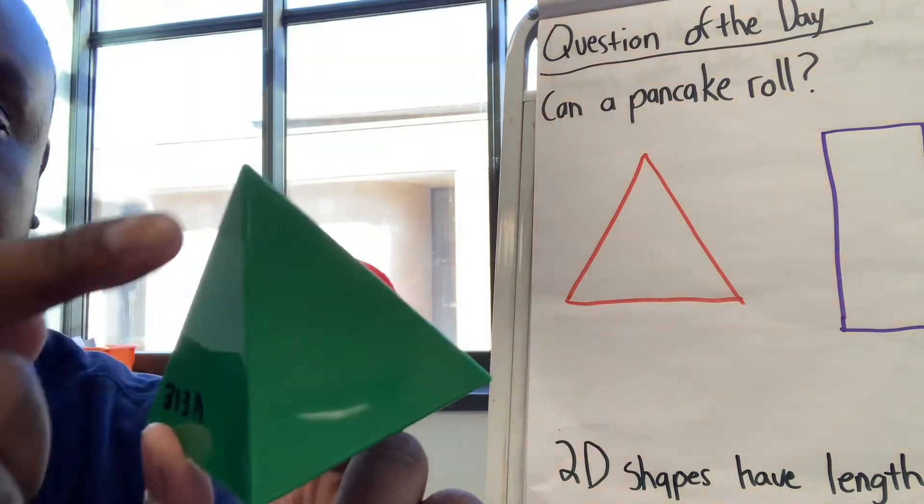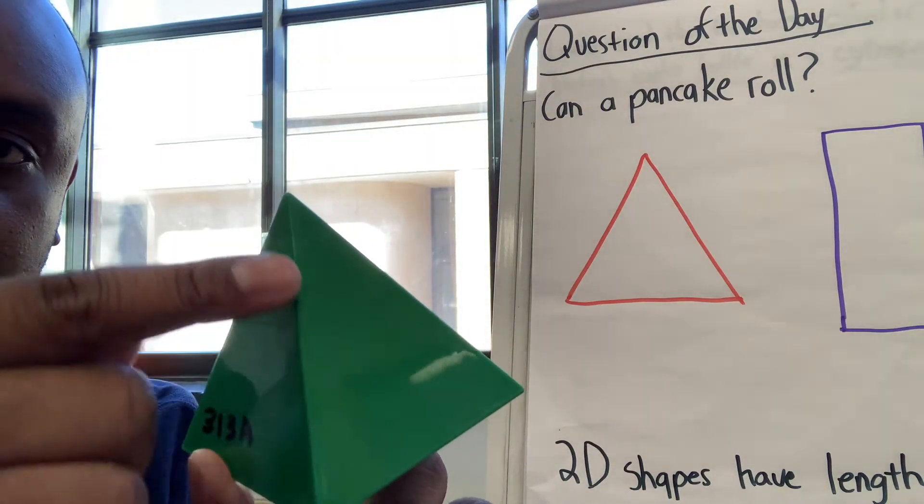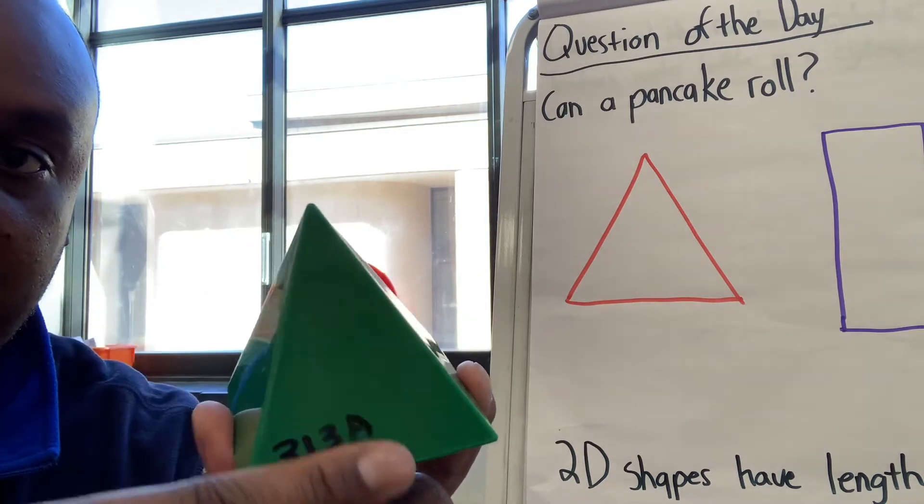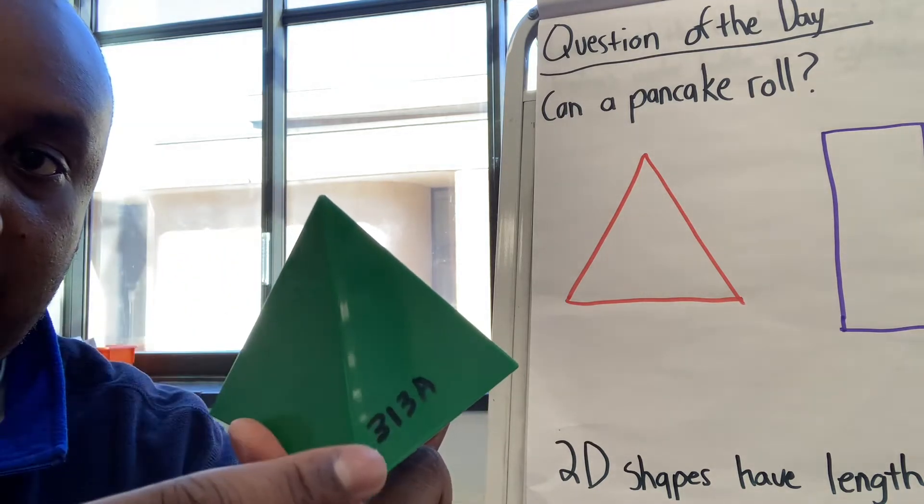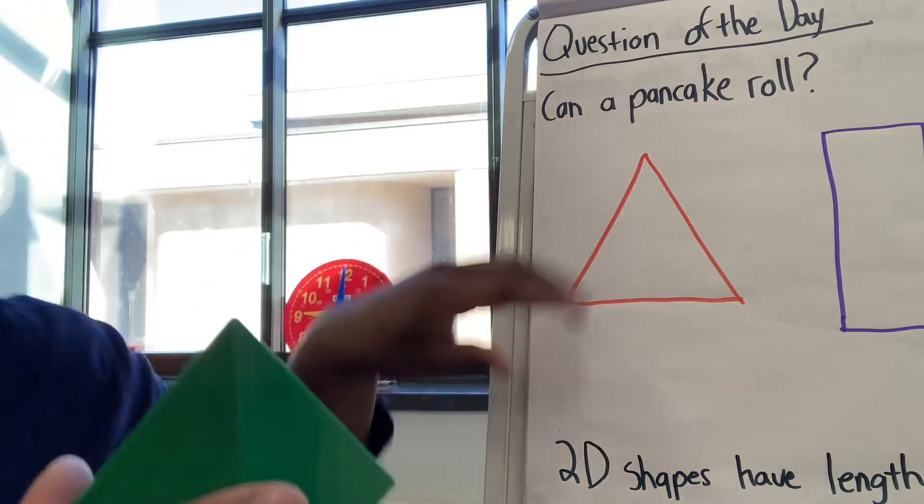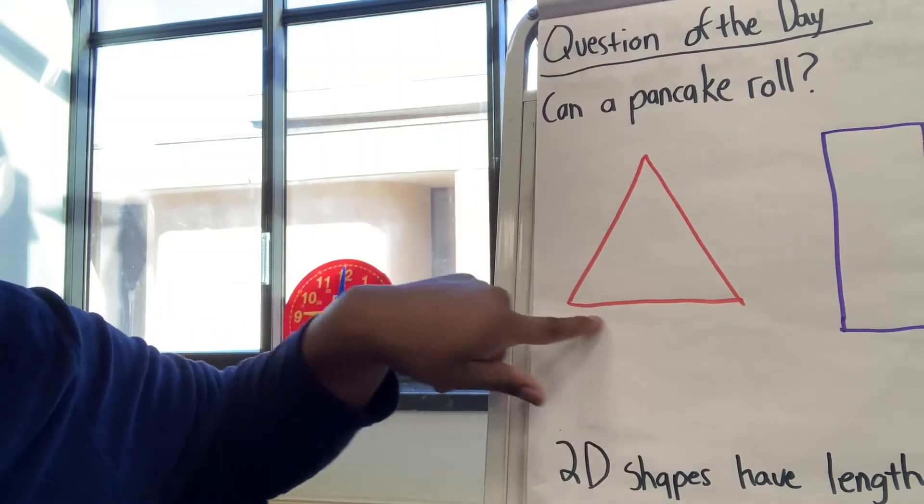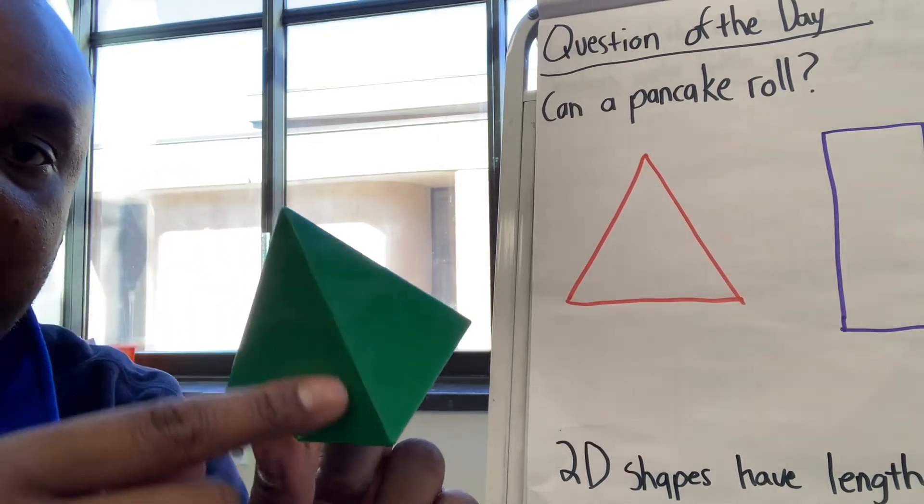3D shapes have edges and faces. This is the face. This is the edge. This triangle is flat. It only has length and width. This has faces and edges.